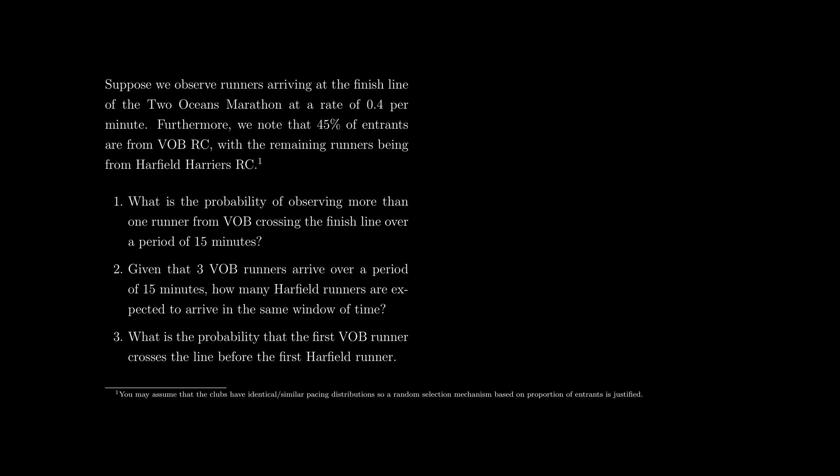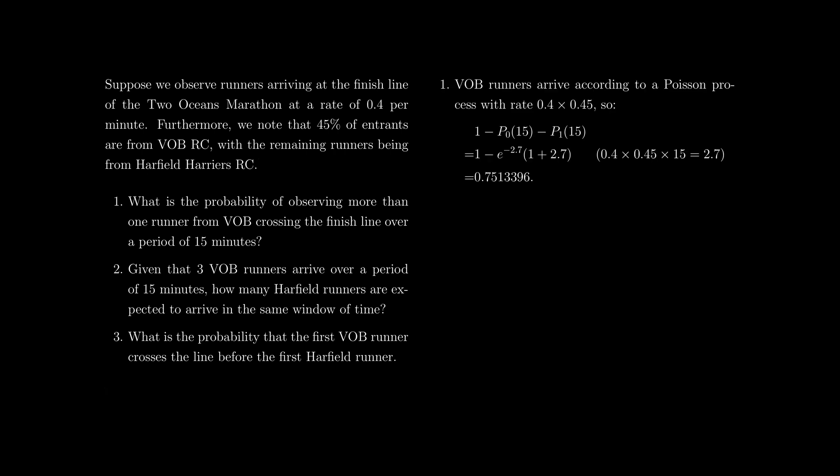Question one: what is the probability of observing more than one runner from VOB crossing the finish line over a period of 15 minutes? VOB runners arrive according to a Poisson process with rate 0.4 times 0.45. We then calculate the probability of observing more than one runner: 1 minus P(N=0 over 15 min) minus P(N=1 over 15 min). Plugging in the values gives a probability of around 0.75. The key step was identifying the appropriate adjusted rate parameter for the VOB sub-process.